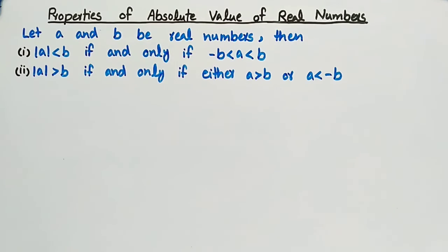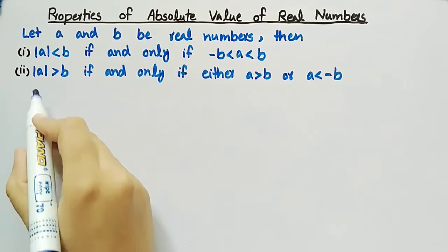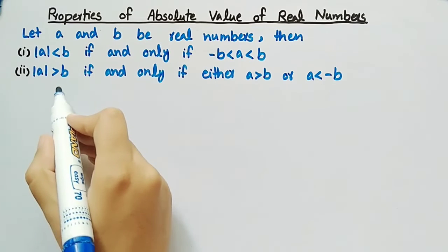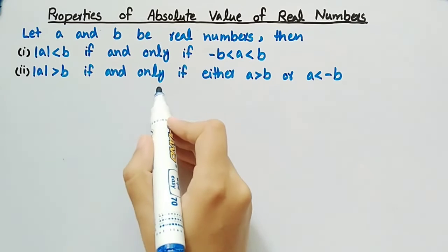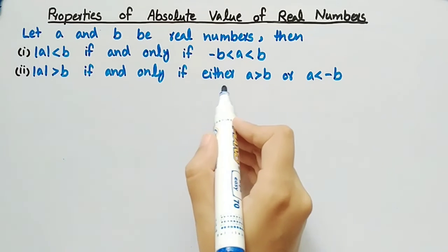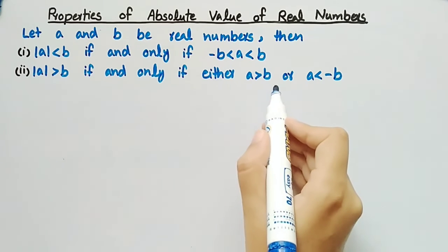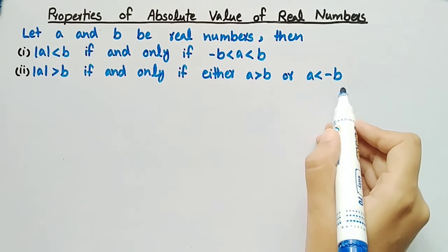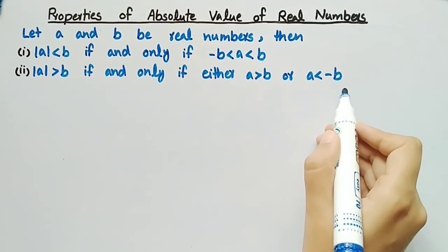The second property is: the absolute value of A is greater than B if and only if either A is greater than B or A is less than minus B.